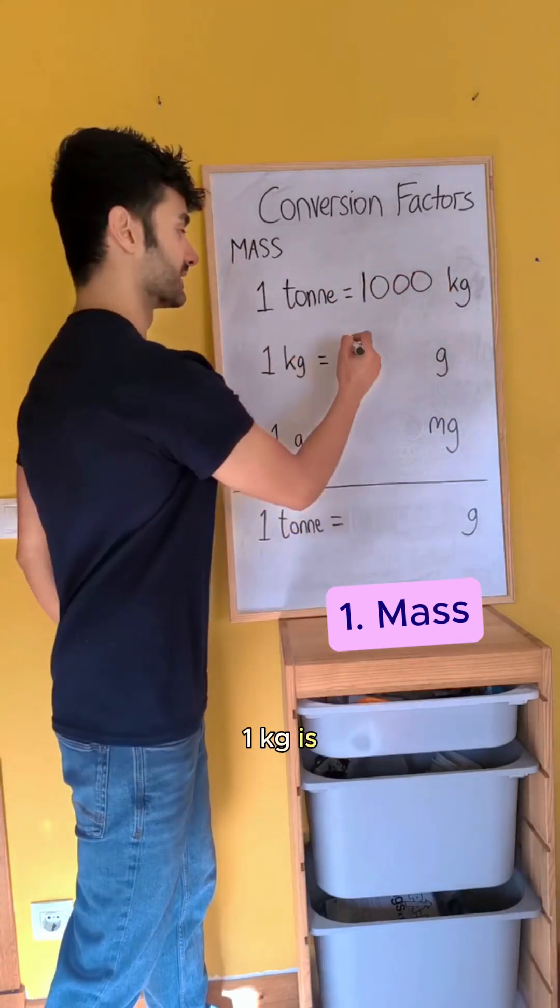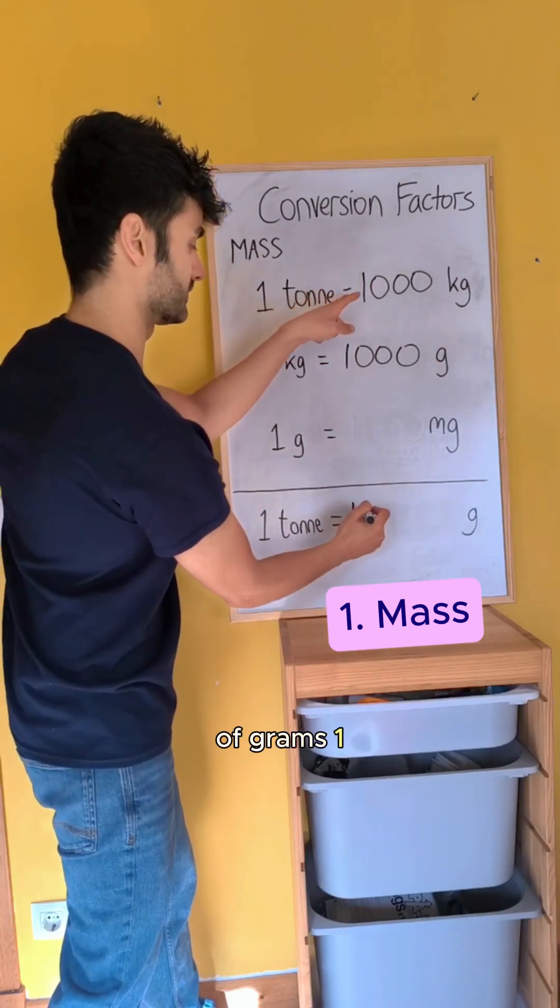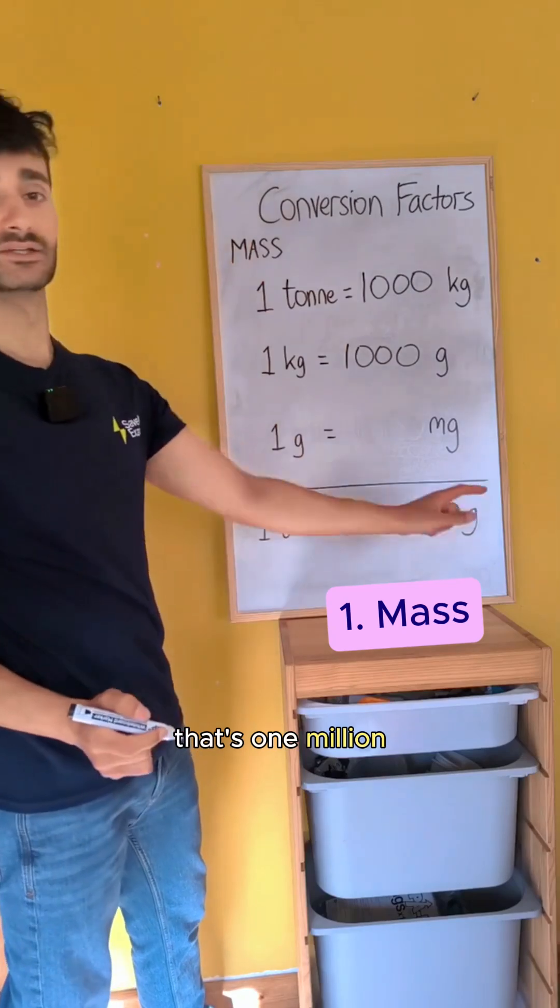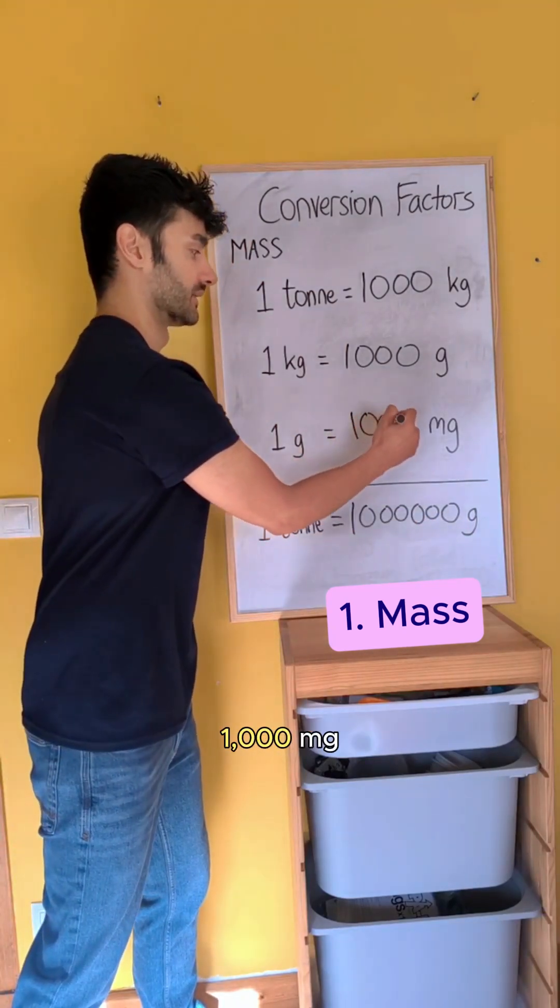One kilogram is a thousand grams. That makes one ton in terms of grams one zero zero zero zero zero. That's one million grams. You also need to know that one gram is a thousand milligrams.